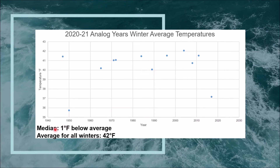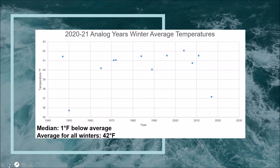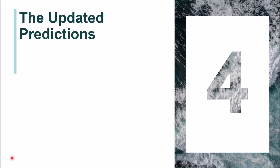The median winter temperature across analog years was about one degree below average. A trend I really noticed is that a lot of my analog years had a cold snap or arctic blast occur in January or early February — all three of my top analog years have this too — after a warmer-than-average December. Those top years are 1970-71, 1988-89, and 2003-04. No winter in my analog years was considered warmer than average, although only two winters were significantly colder than average.